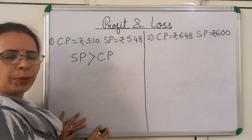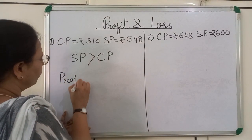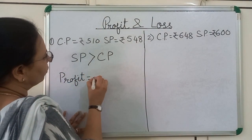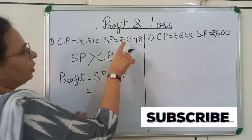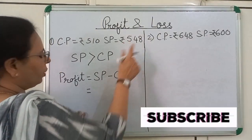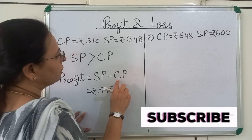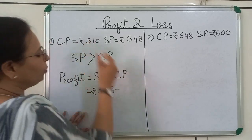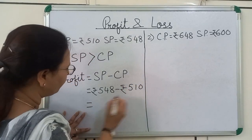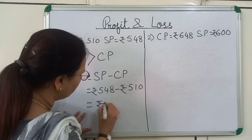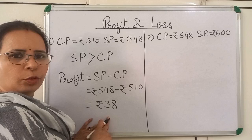You can see here selling price is greater than cost price, so hence it made a profit. Profit is equal to SP minus CP. SP is Rs. 548 minus CP, which is Rs. 510. When we subtract, we will get Rs. 38. Rs. 38 is the profit.